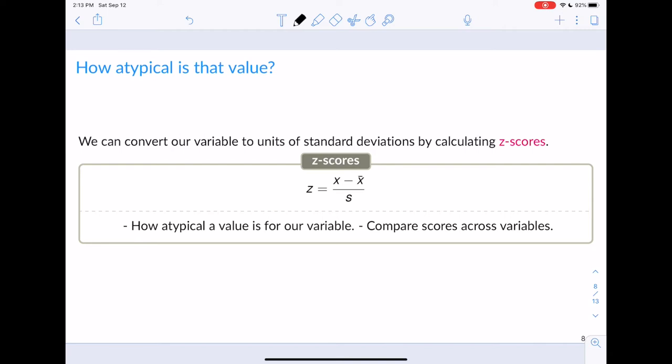The next thing we want to know when talking about variability is if we have a value on a participant or penguin, we might want to know how unusual is that value relative to the other values. What we can do is calculate z-scores. A z-score allows us to convert variables to units of standard deviations, so we can say a value is x number of standard deviations above the mean or below the mean.